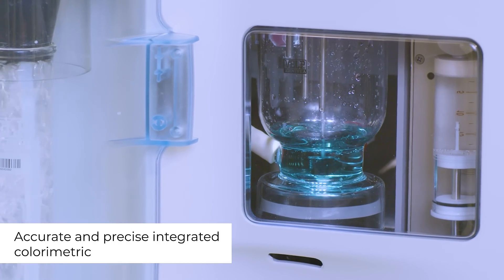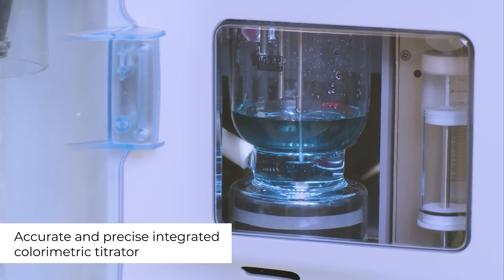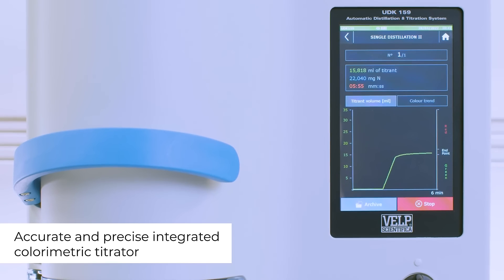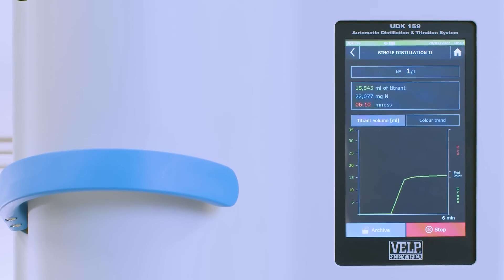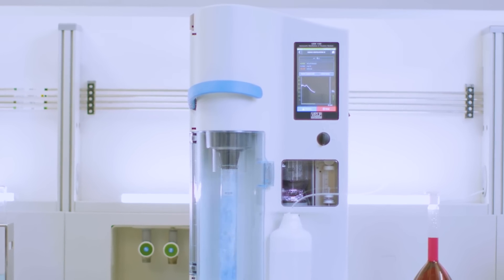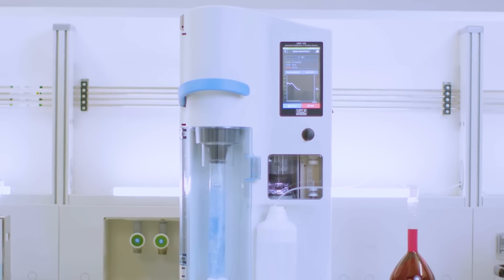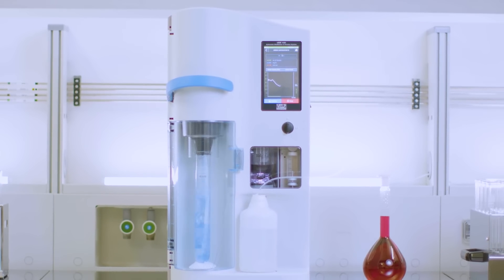The UDK-159's integrated colorimetric titrator provides reliable results as it is based on precise chemical reactions of indicators and simplifies user activities as there is no need for time-consuming maintenance or additional costs for calibration.